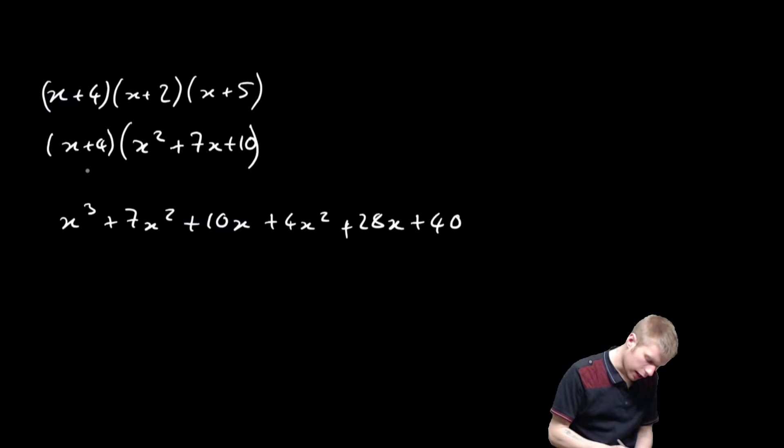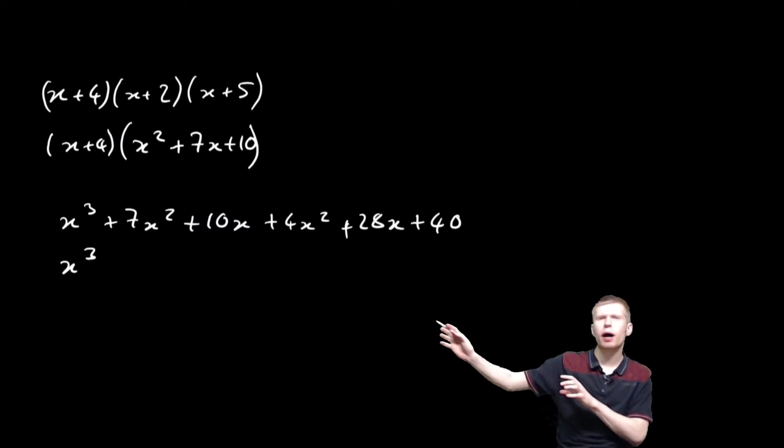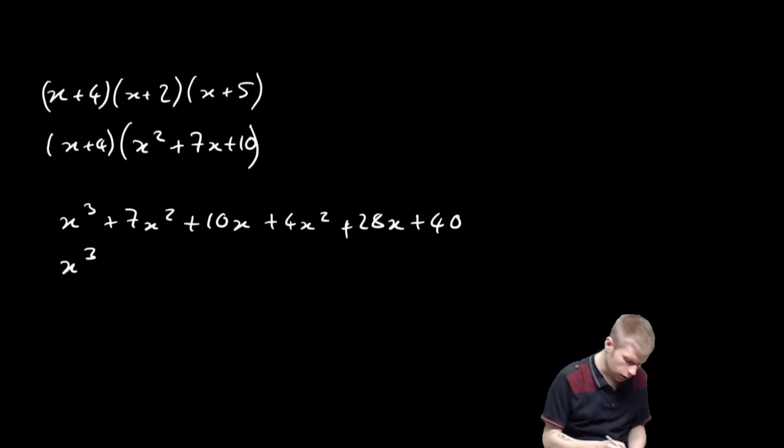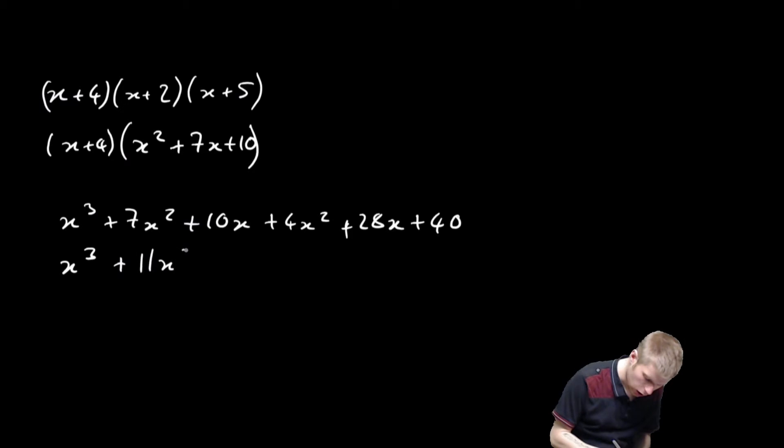And then all it's a case of now is just doing a little bit of tidying up to make it look nice. So x³. Let me collect the x² terms. So I've got 4x² and also 7x². So I'm going to have 11x² in total.